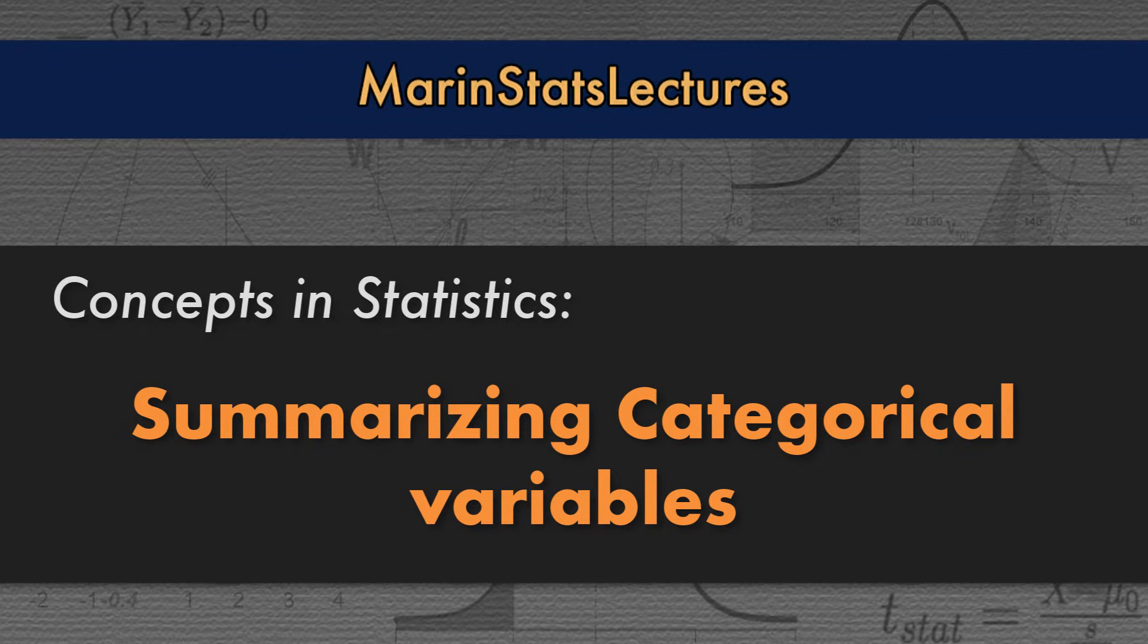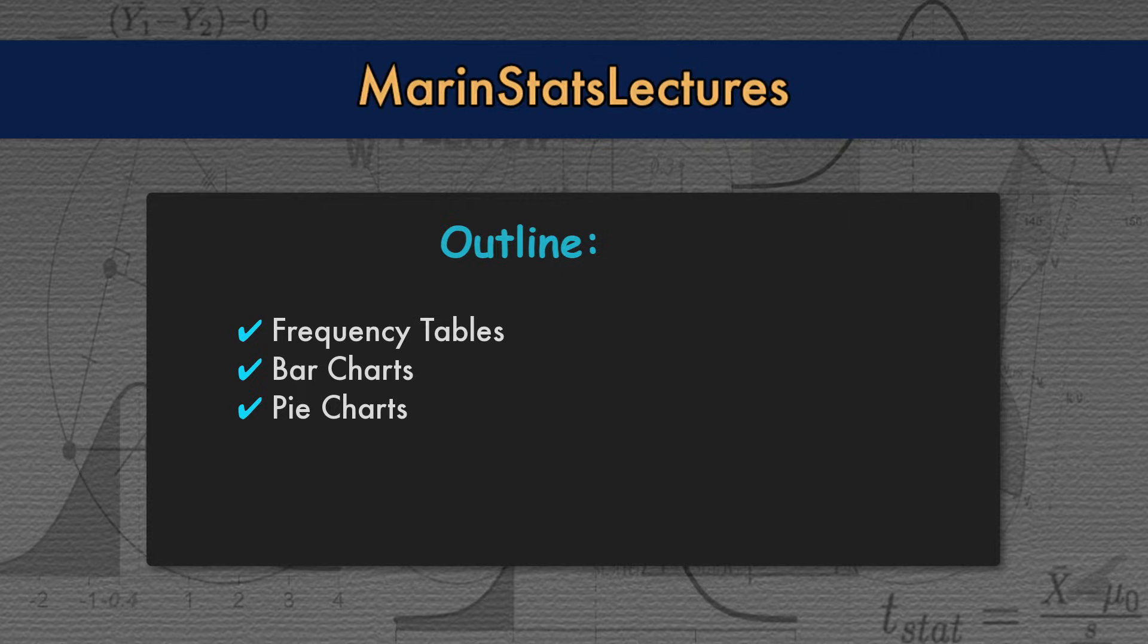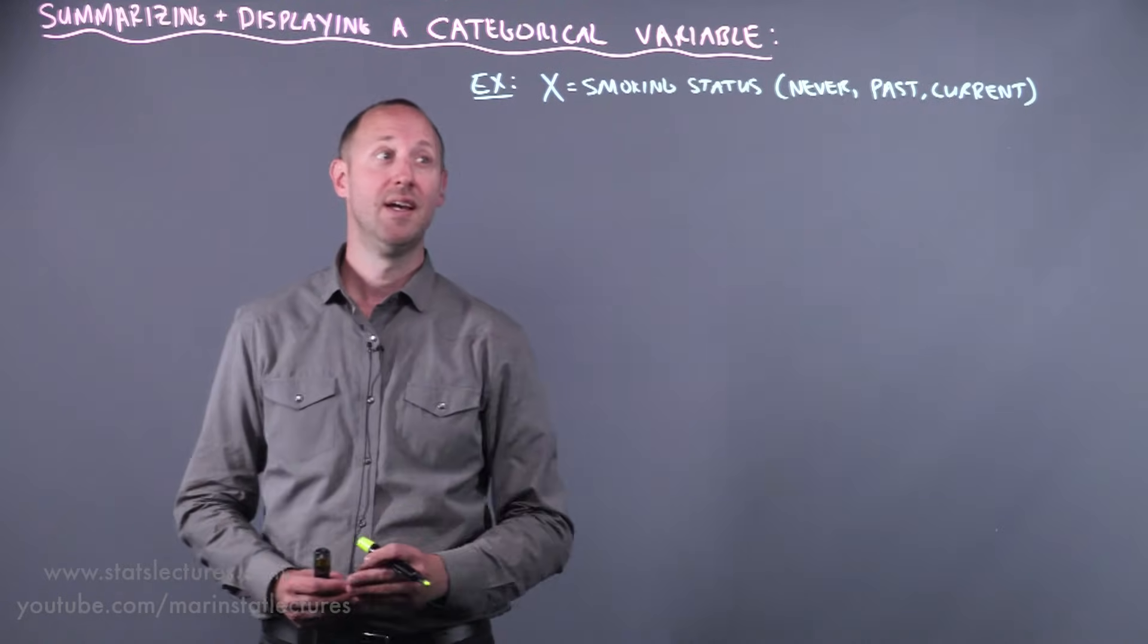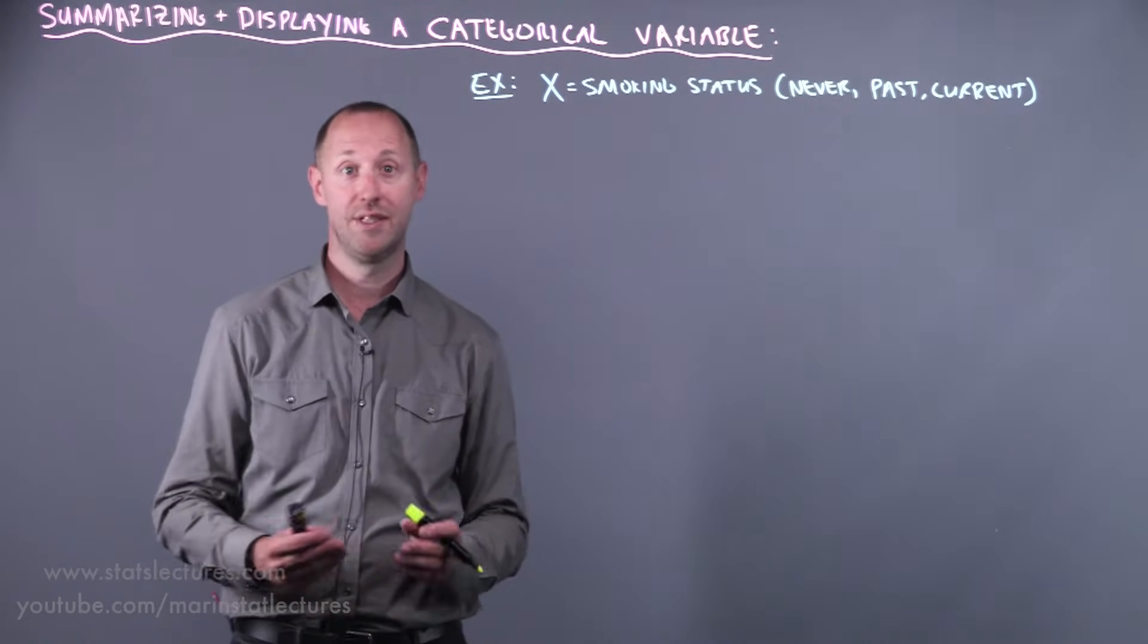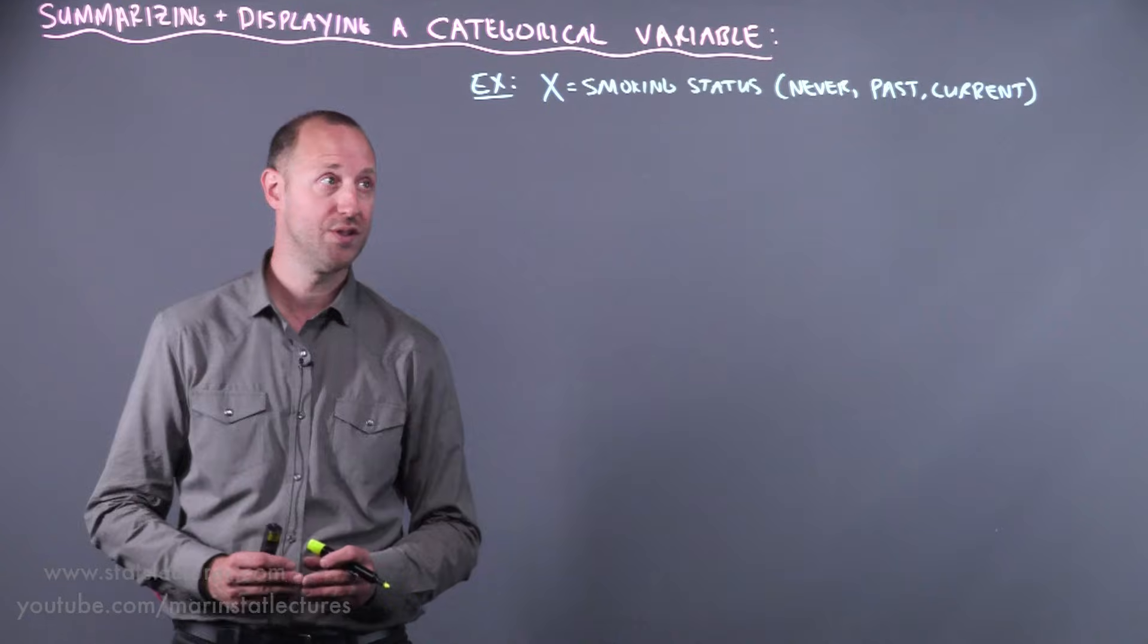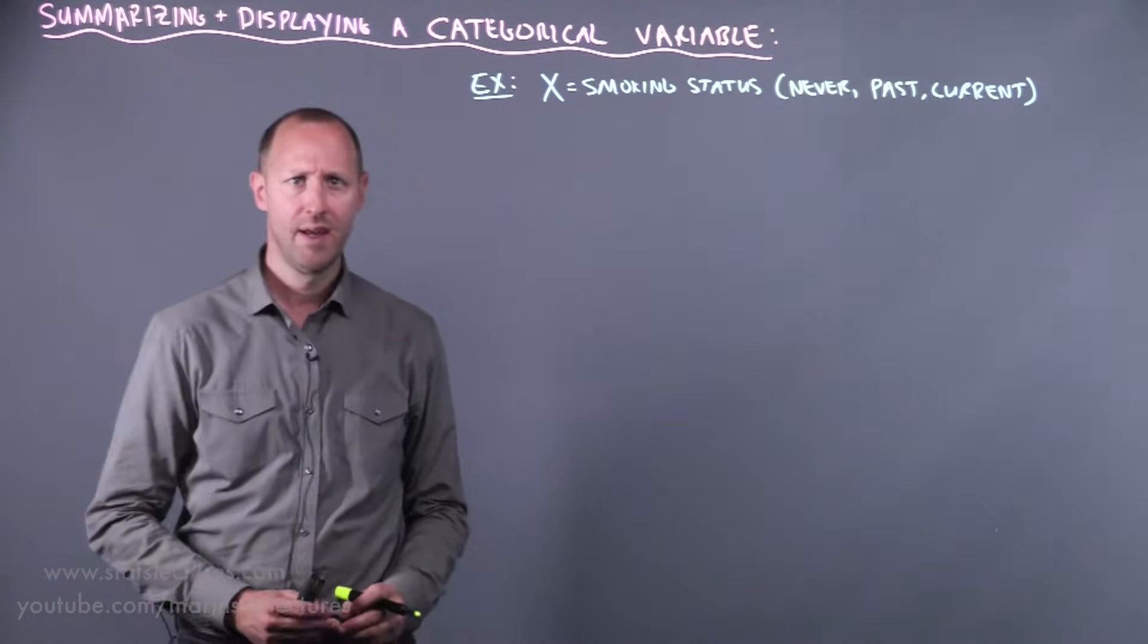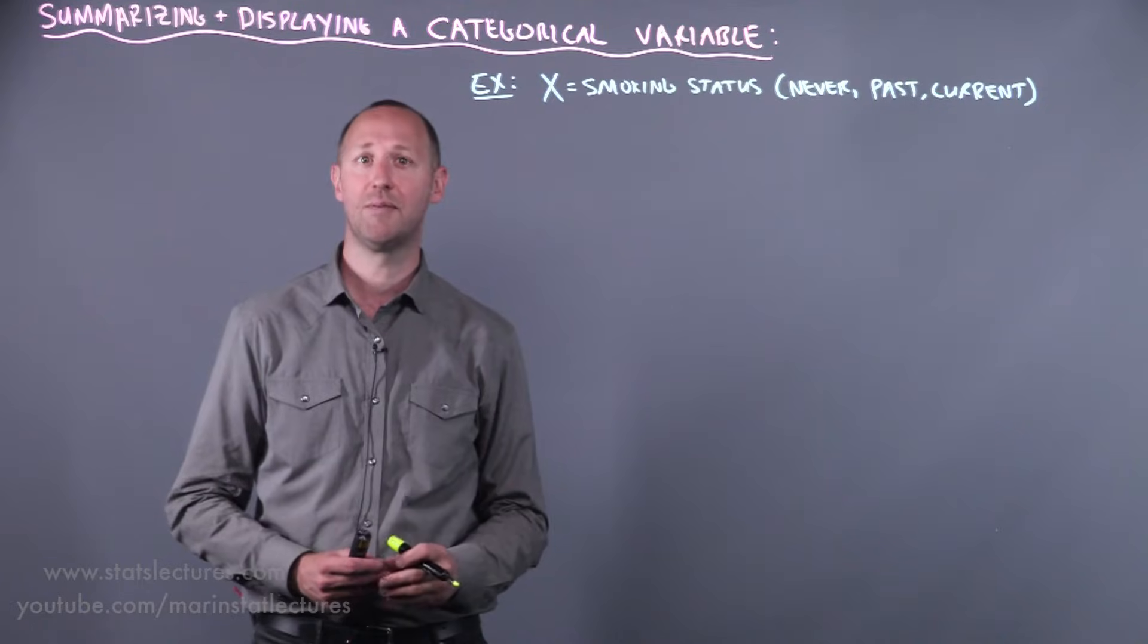Let's talk about how to summarize a categorical or qualitative variable both graphically and numerically. For example, we'll suppose that we've taken a sample and recorded the smoking status of individuals as never, past, or current smoker, and we'll assume we've taken a sample size of 200.